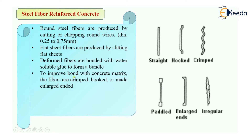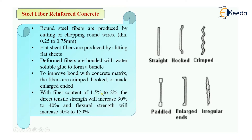To improve the bond with the concrete mix, we can use irregular shape, crimped shape, or hooked shape fibers. Because of these hooks and crimped shapes, they give good bonding in the concrete. With fiber content of 1.5 to 2 percent, direct tensile strength will increase by 30 to 40 percent and flexural strength will increase by 50 to 150 percent.